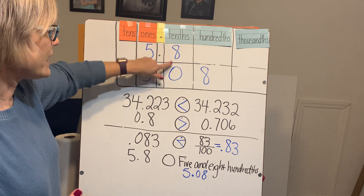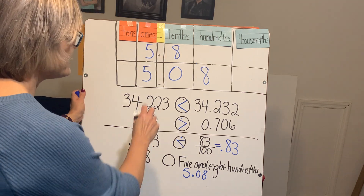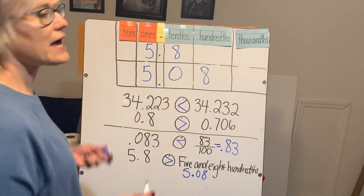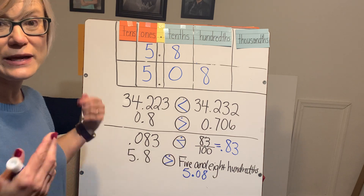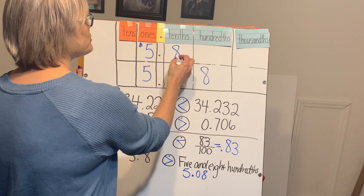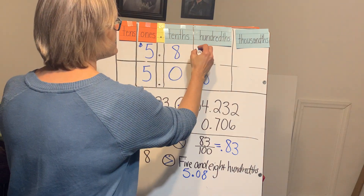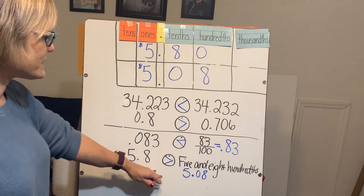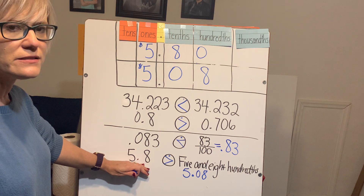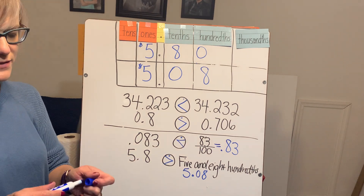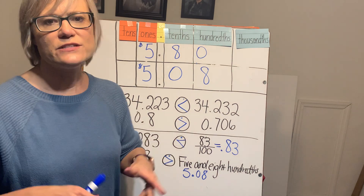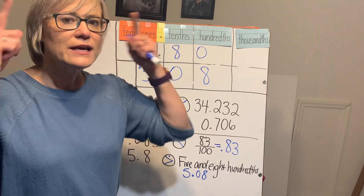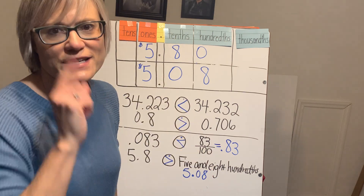Comparing them: the fives in the ones are the same, but in the tenths I have an eight versus a zero. Eight is greater than zero, so five and eight tenths is greater than five and eight hundredths. We can also think of it like money: five dollars and eighty cents versus five dollars and eight cents. It's easy to see that five dollars and eighty cents is more than five dollars and eight cents. Keep reviewing — you've got practice sheets for homework this week. Keep watching, keep thinking, always stay curious, and I'll see you next time!